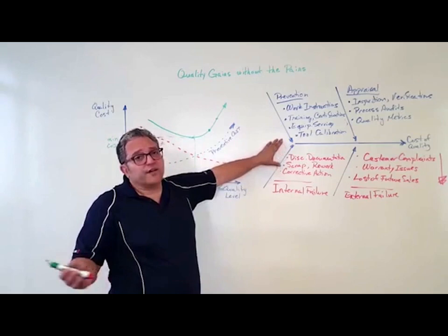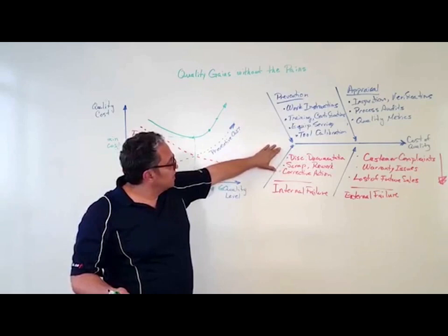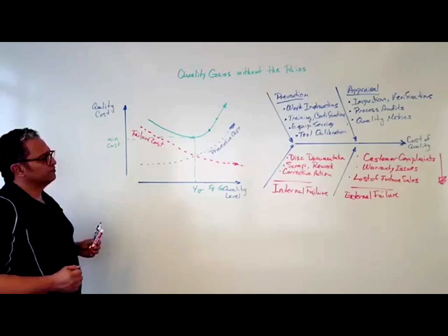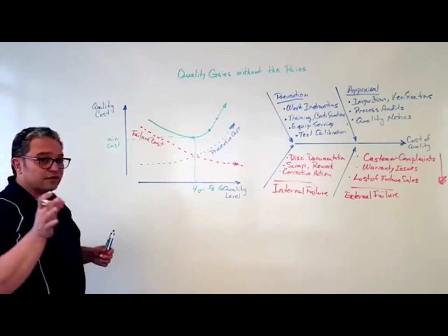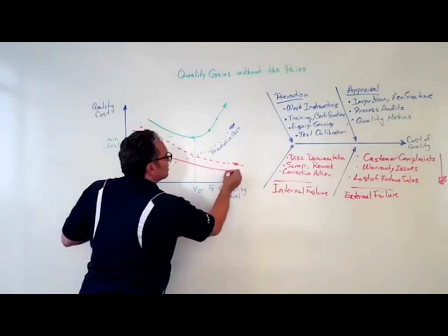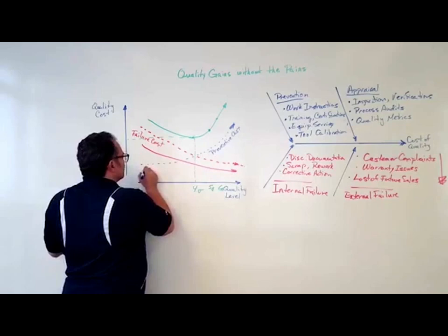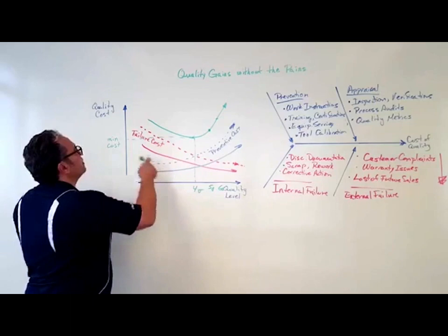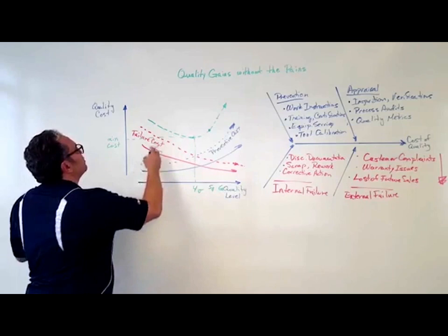What if we reduce, if we finally do get failure, but we reduce the cost of discrepancies and what it takes to document them? And we prioritize our corrective actions. Those are the type of improvements we're going to talk about in the book that you're going to download. And what that's going to do is reduce our cost of failure. It's going to bring it down. It's going to reduce our preventive costs.